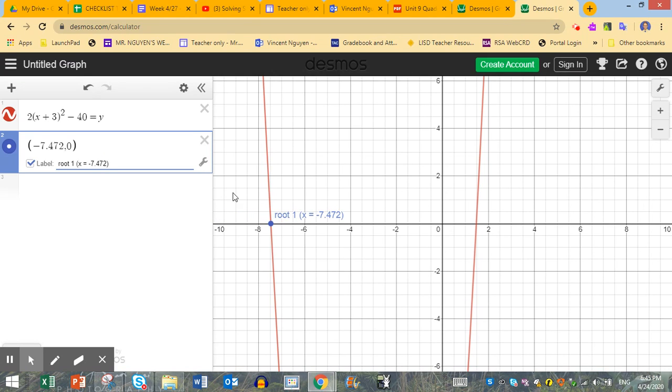And if you move to the right, where the other x-intercept is, that's your other solution. So it's the positive version, 1.472. So if you go over here and plot that point, 1.472, 0, and then you can label that and call it root 2, x equals 1.472.